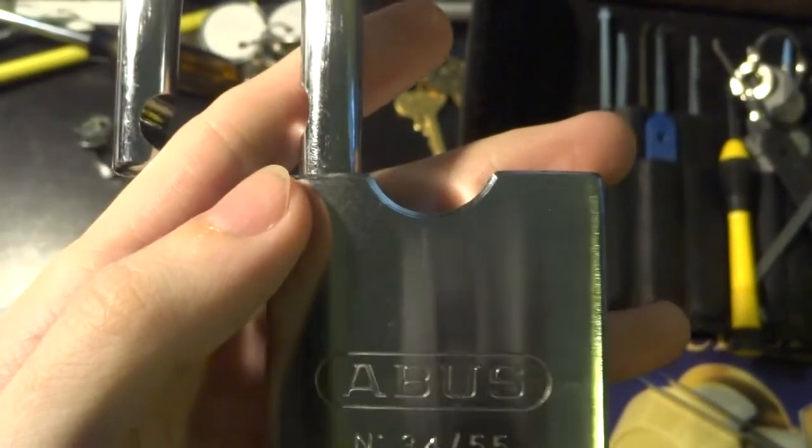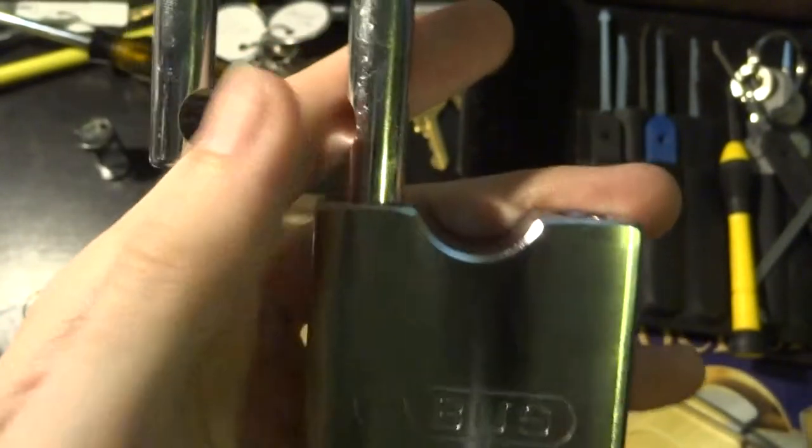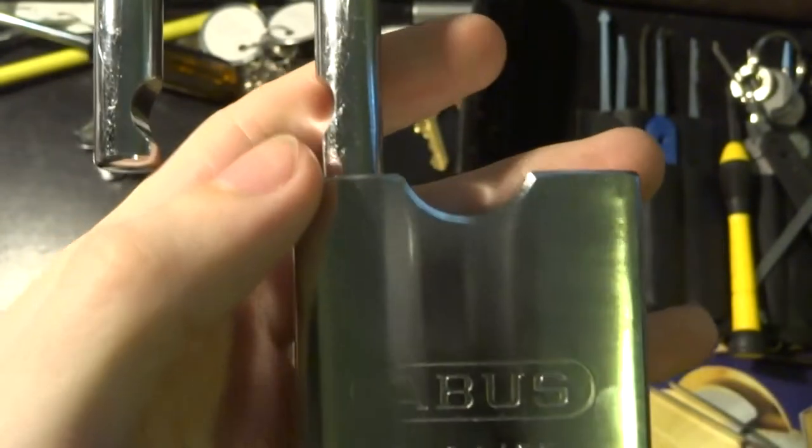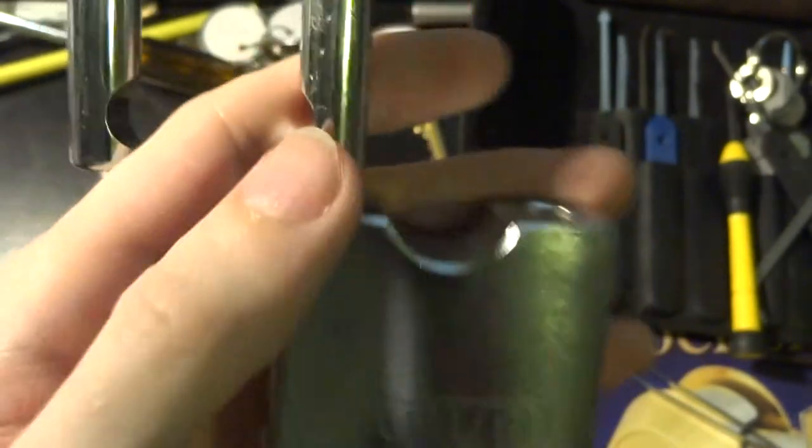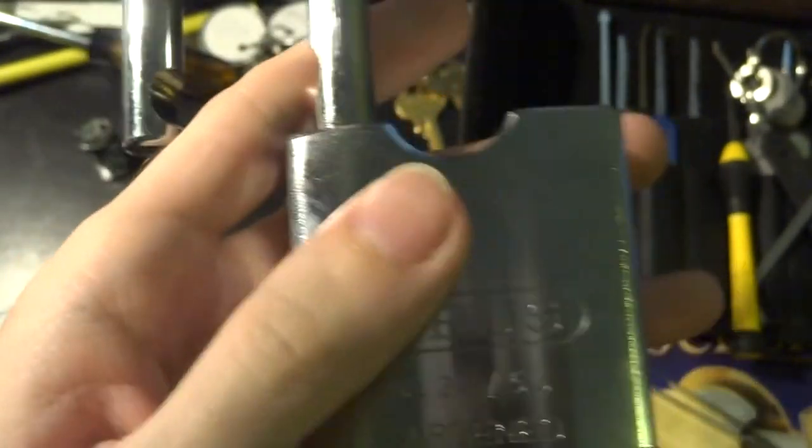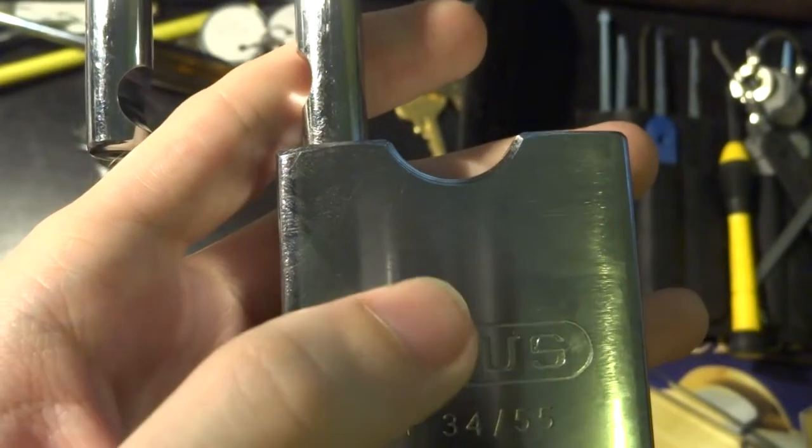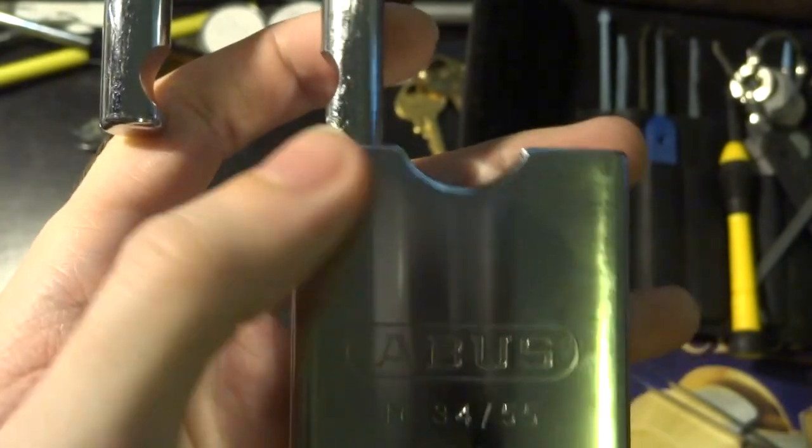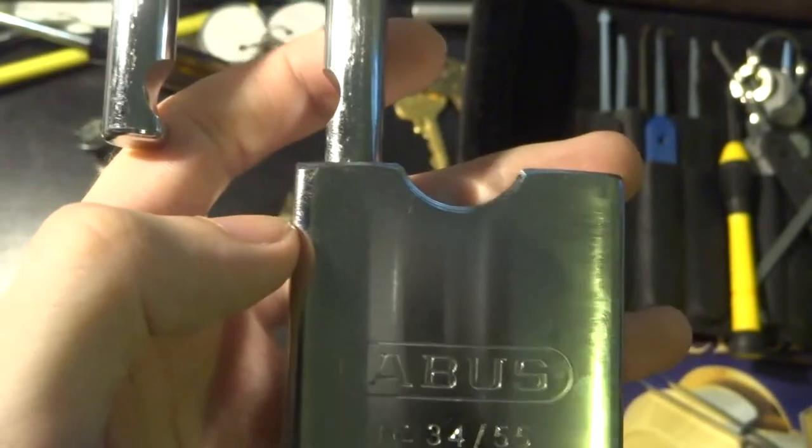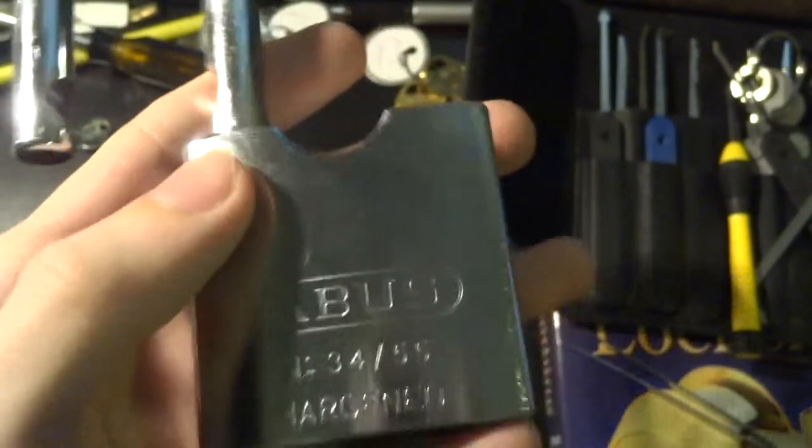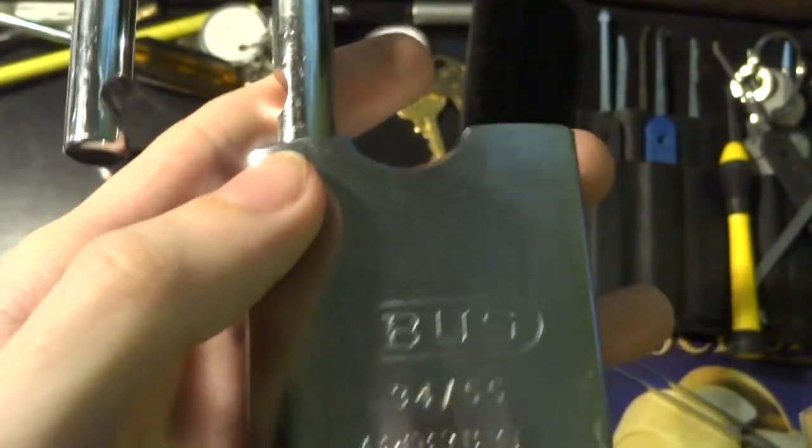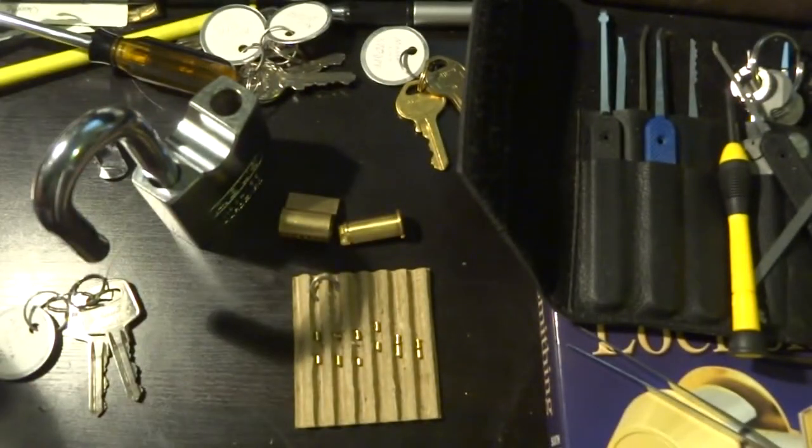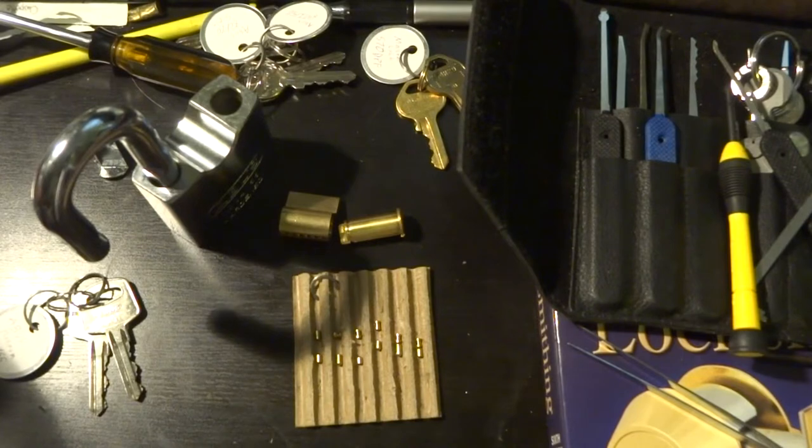That's the Abus 3455, and really you can get these remarkably cheaply online, usually from eBay. But you know, they're a good choice if you need something really substantial to lock something up. It's not going to give you the same protection as a disk detainer or a Medeco Biaxial or something like that. But for a traditional pin tumbler lock, this is probably one of the best I've seen. So until next time, have fun, happy picking, and stay safe.